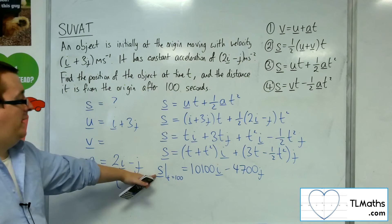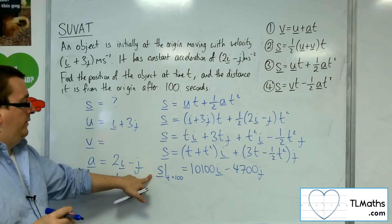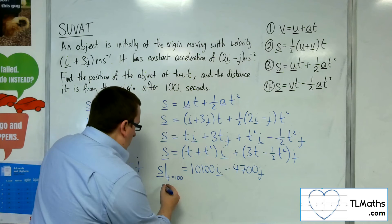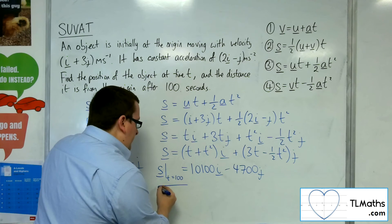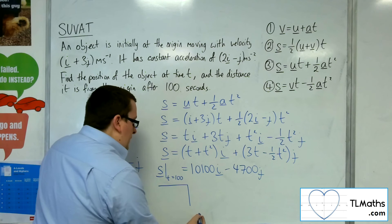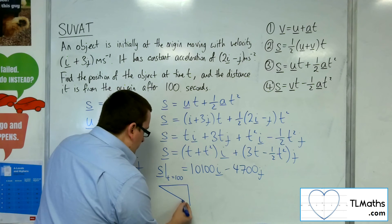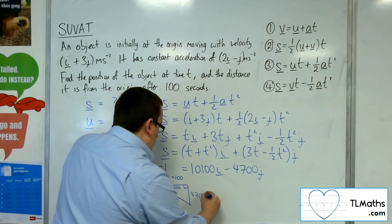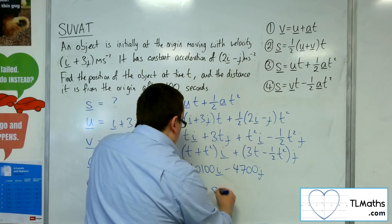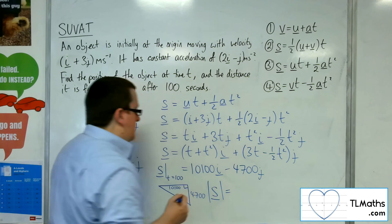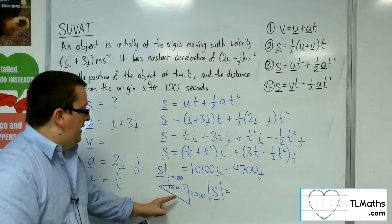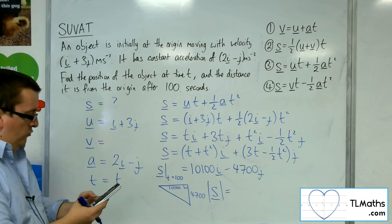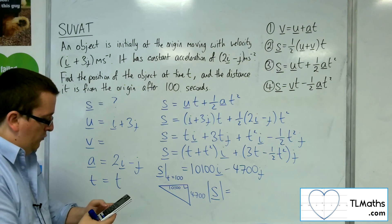So, that's the displacement after 100 seconds. But I want to know the distance it is from the origin. So, I've got a right-angled triangle that's gone 10,100 that way, then 4,700 that way. So, the distance at t equals 100 is the hypotenuse of that triangle. So, the square root of 10,100 squared plus 4,700 squared.